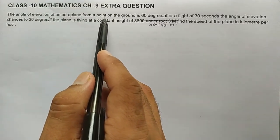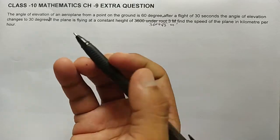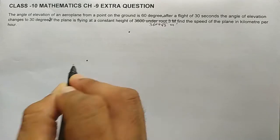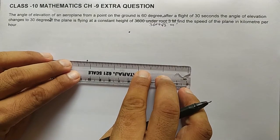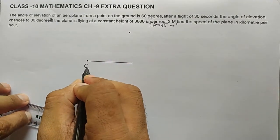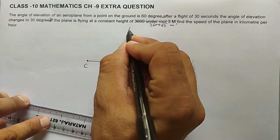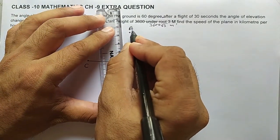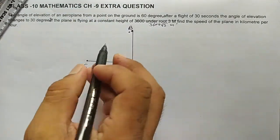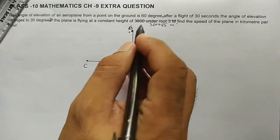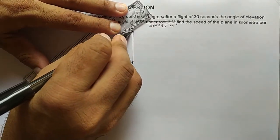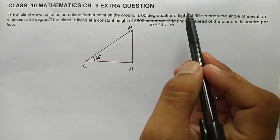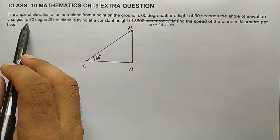Let's understand the first line: the angle of elevation of an aeroplane from a point on the ground is 60 degrees. Suppose this is the aeroplane and this is a point on the ground — point C. The aeroplane is at point B. The angle of elevation from point C is 60 degrees, so from C, the ray of sight to the aeroplane and the horizontal make an angle of 60 degrees.